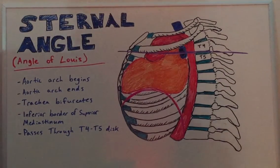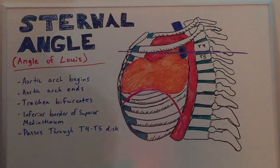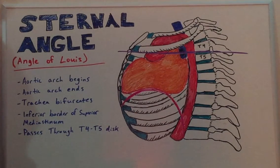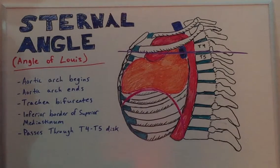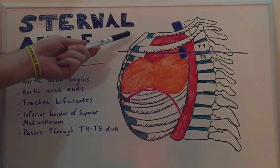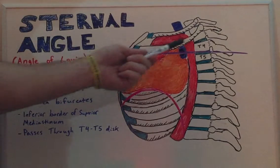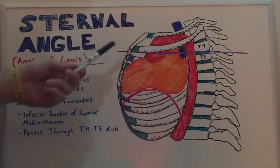Today's lecture is on the sternal angle, or the angle of Louis. As we can see from this diagram, this landmark on our anterior thorax demarcates the juncture of the manubrium, the sternum, and the second rib.